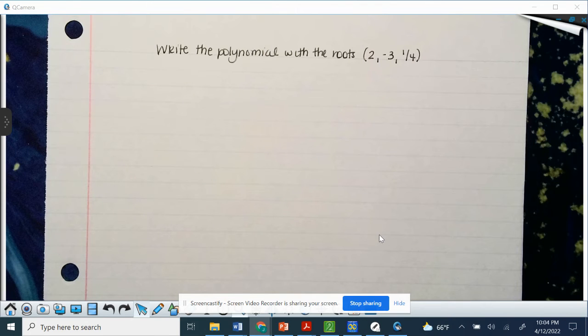You were asked to write the polynomial with the roots 2, negative 3, and 1 over 4 as a review because we cannot forget this. I promise it will be on your EOC.